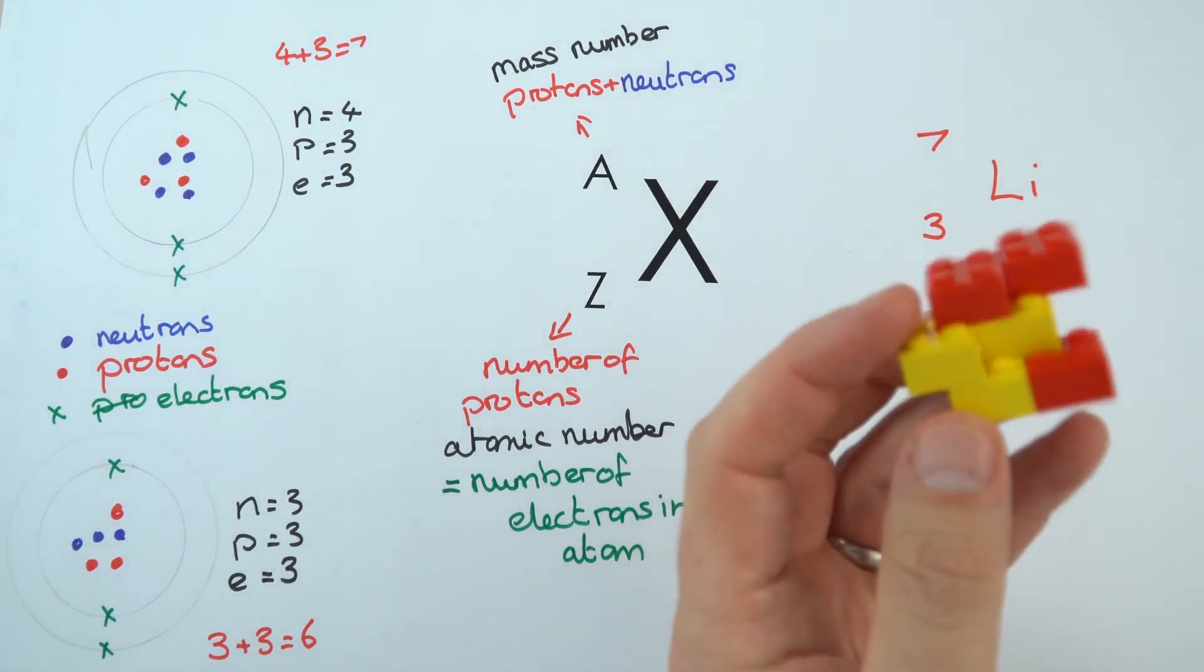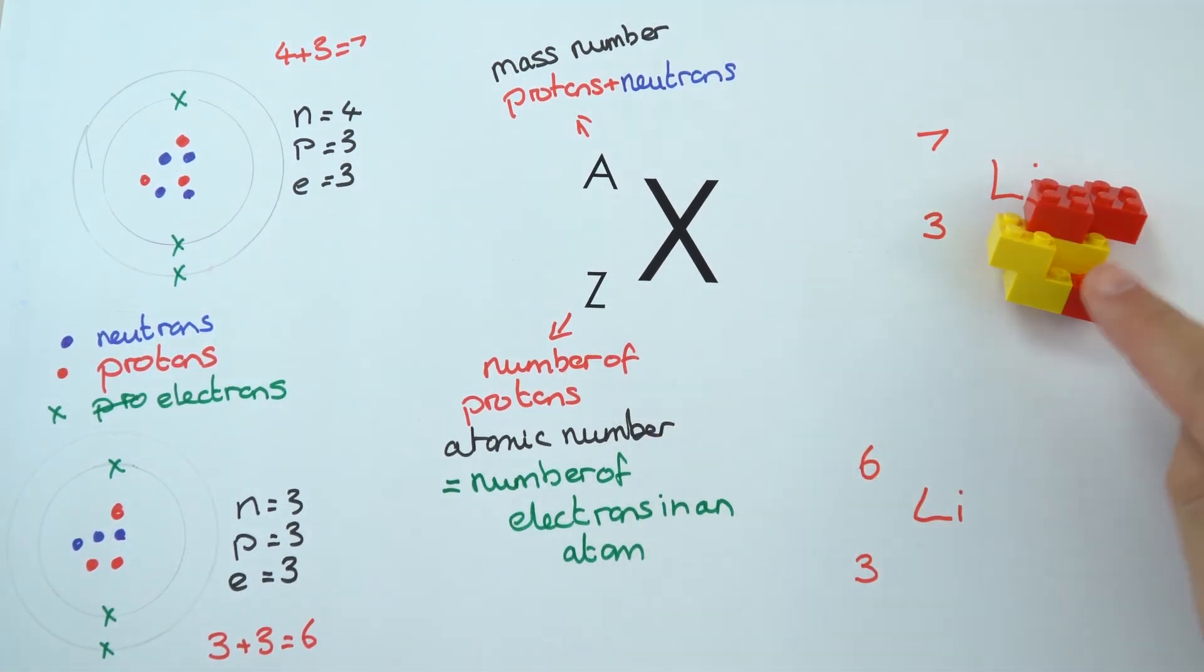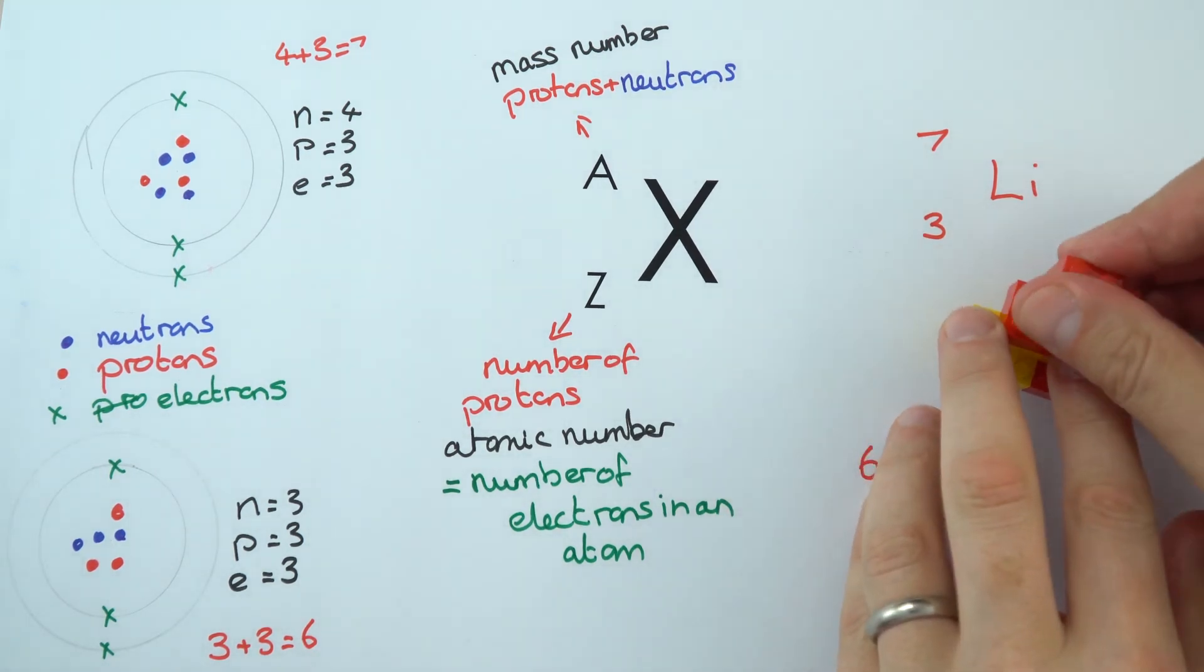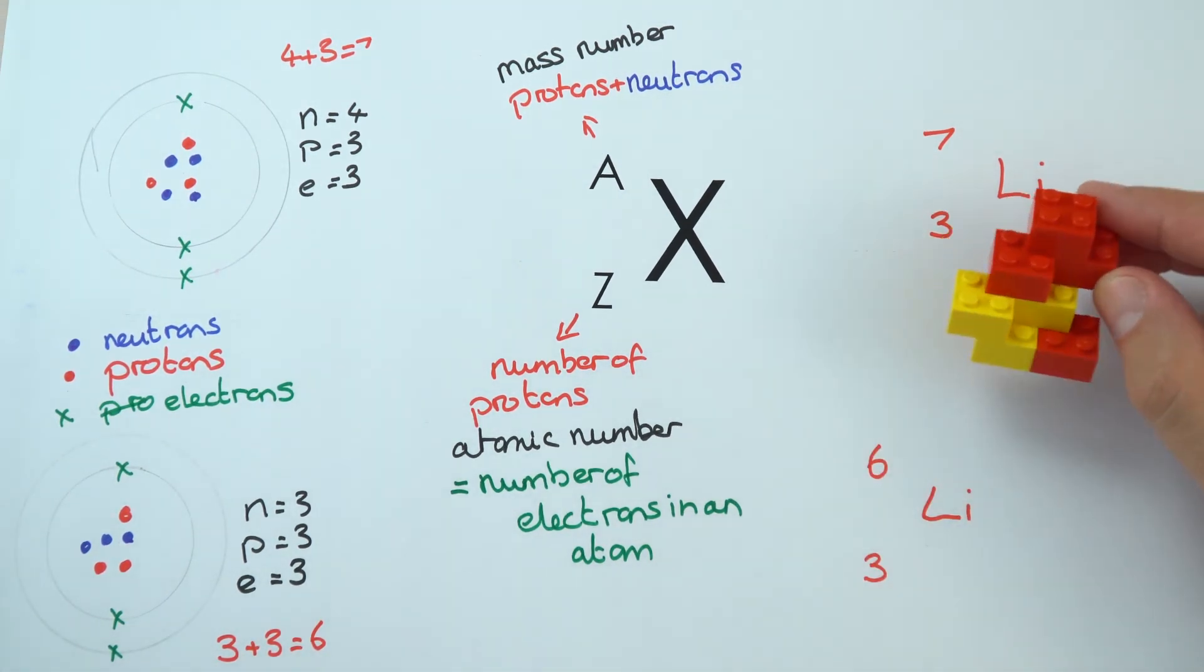And if we could show this in Lego, again Lego is my thing, we might have three protons and four neutrons in this lithium nucleus. We're kind of ignoring the electrons at the moment.